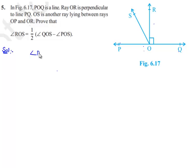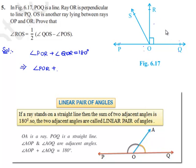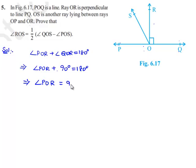Therefore, the sum of angles POR and QOR is equal to 180 degrees. That implies angle POR plus angle QOR equals 90 degrees, since OR is perpendicular to POQ. So 90 plus 90 degrees equals 180 degrees, which implies angle POR is equal to 90 degrees.